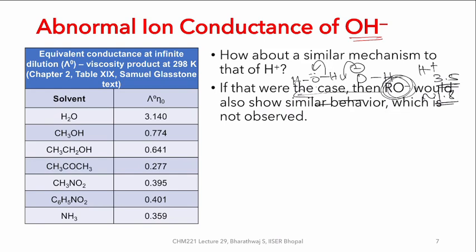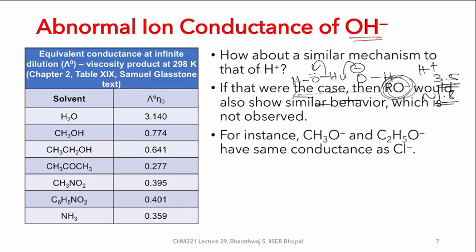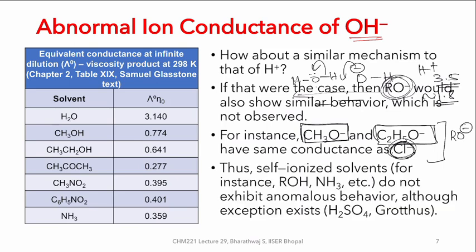If the Grotthuss mechanism were operative, then RO⁻ would also show a similar behavior. Interestingly, this has not been observed, which indicates that Grotthuss-type migration of OH⁻ is not that common. For instance, if you look at CH₃O⁻ or C₂H₅O⁻, their conductance is very similar to that of Cl⁻. This indicates that RO⁻ does not have a Grotthuss-type mechanism, so anomalous behavior only occurs where you have self-ionized solvents.